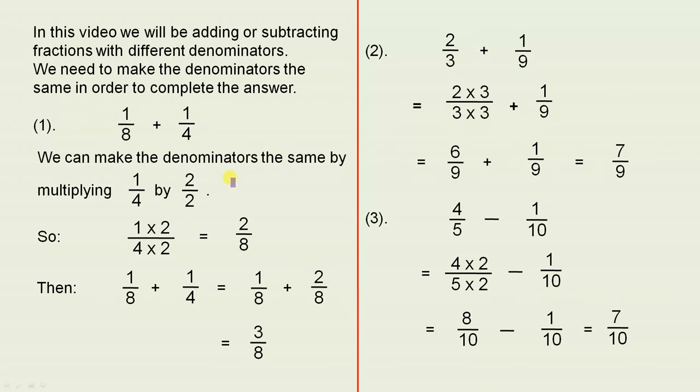So we can make the denominators the same by multiplying 1 over 4 by 2 over 2. If you do that, for example if you multiply the denominator by 2, 2 times 4 is 8, that makes it the same denominator. But you have to multiply the numerator by 2 to keep the value of the fraction the same.